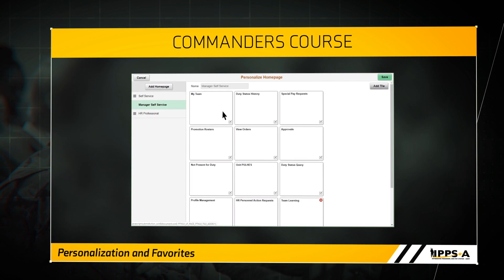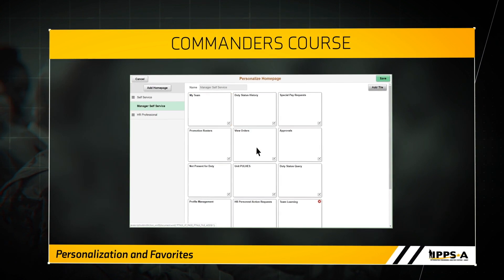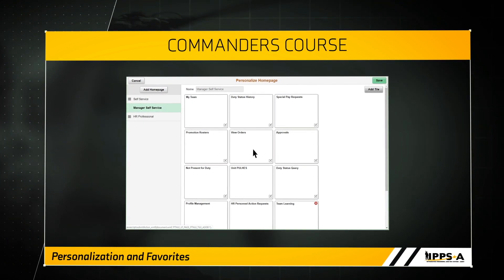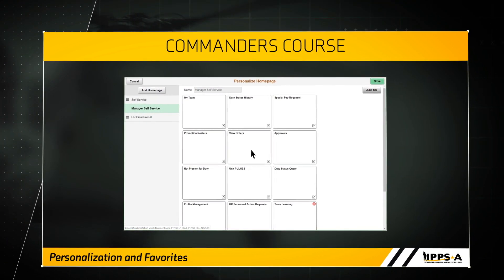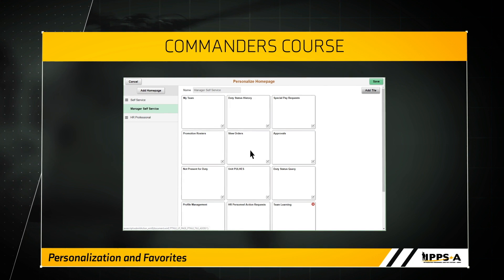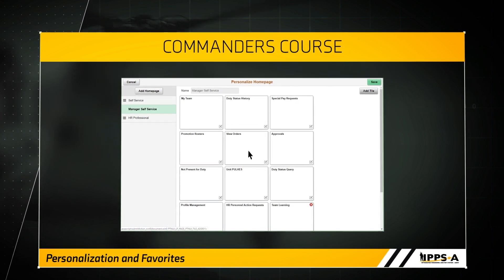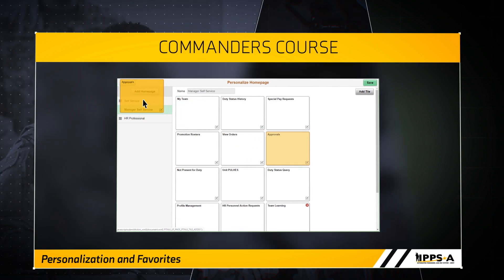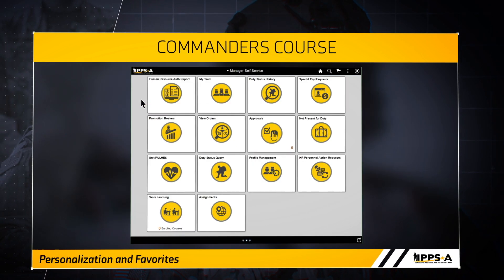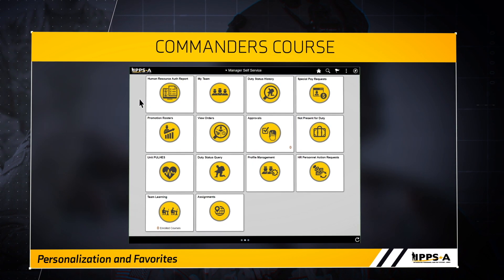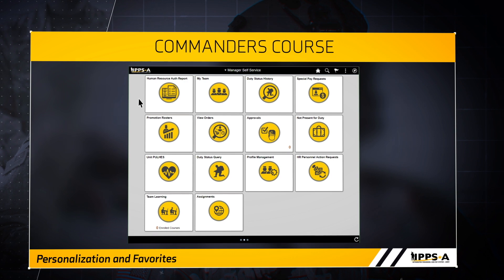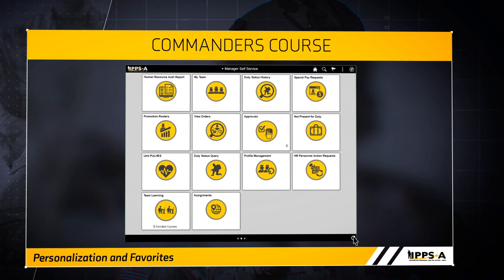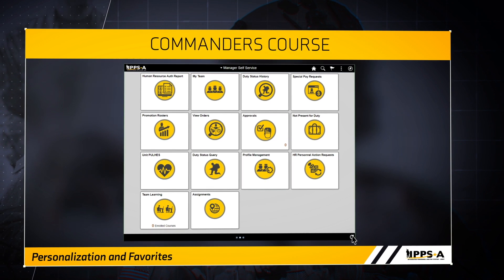You can rearrange the tiles on each homepage by just dragging and dropping the tiles into the desired location. Movement of tiles from homepage to homepage is done by simply dragging and dropping the tile to a new location — for example, from Self Service to Manager Self Service or in any order you choose. Once you are satisfied with the arrangement of your homepage, select the Refresh icon located on the bottom right corner of the screen.